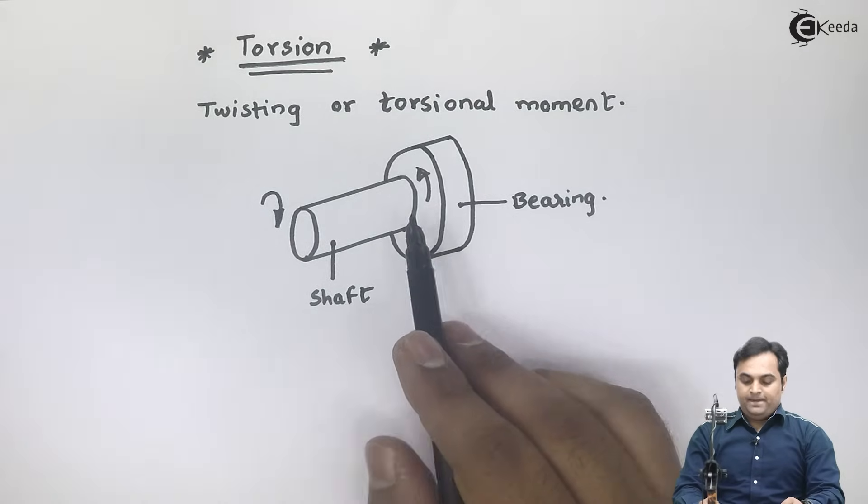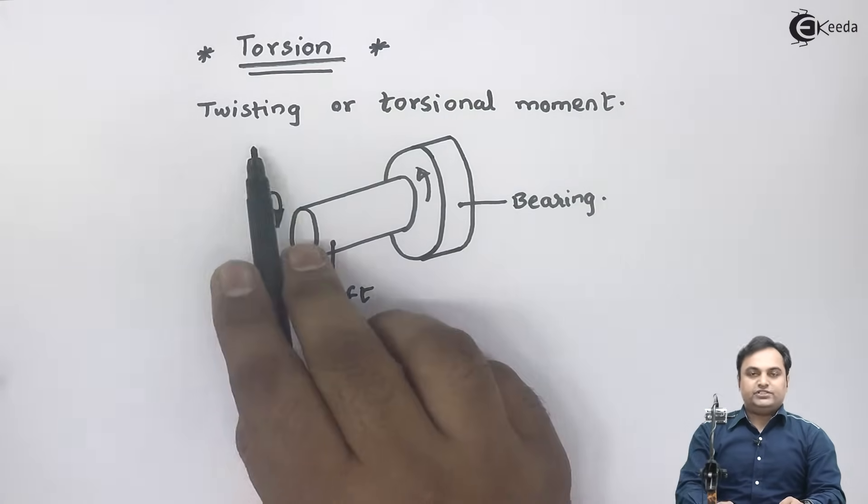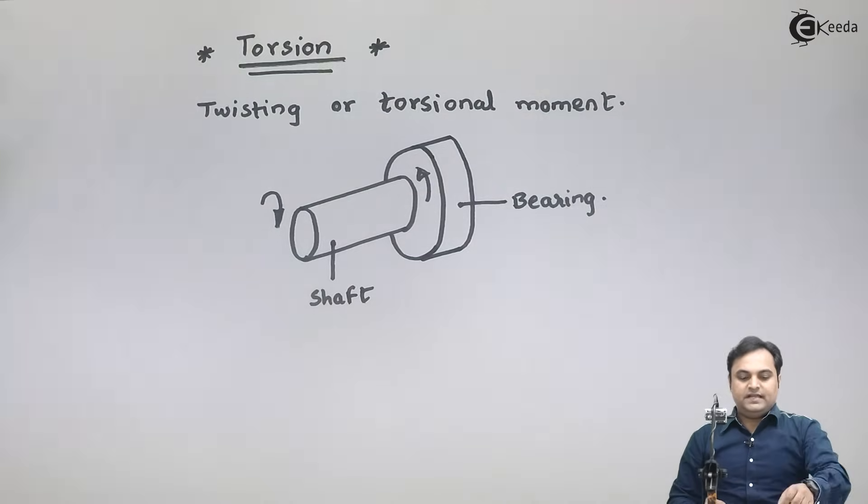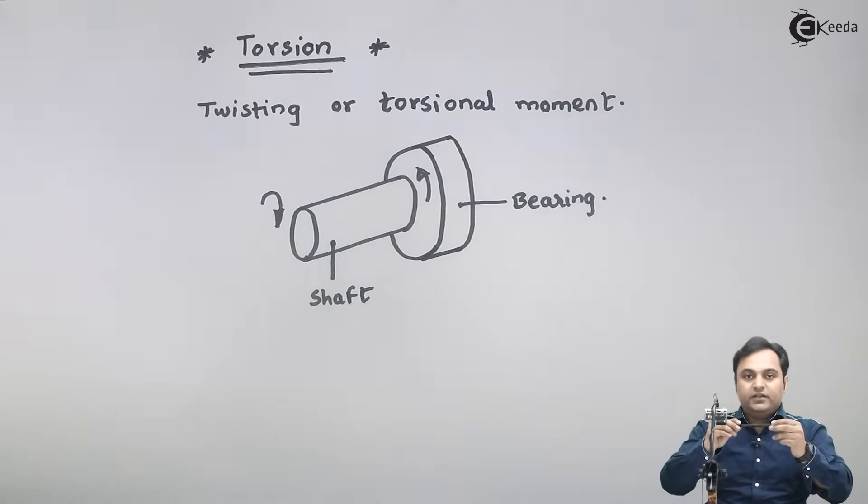Because of these two unequal torques, there is twisting of this shaft. This example is like if I have this pen, if I am rotating the pen in two opposite directions at each of the ends, then this pen would be twisting and that twisting is nothing but torsion.